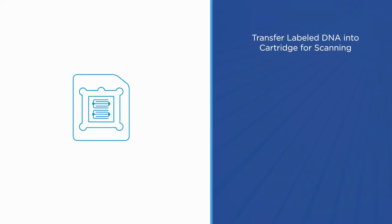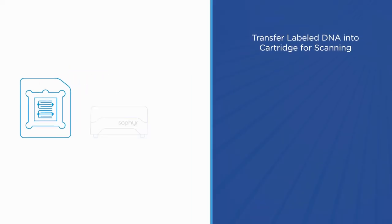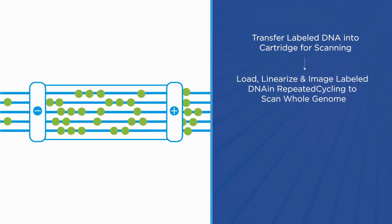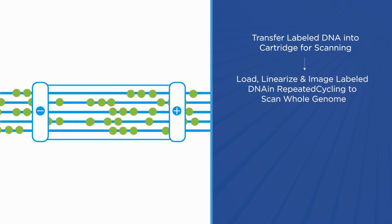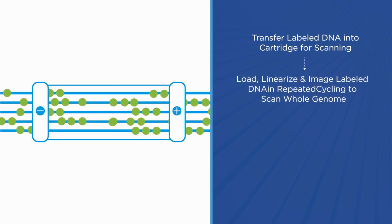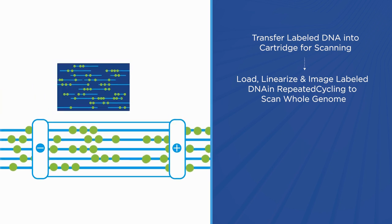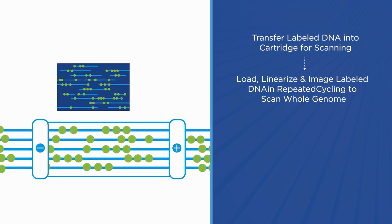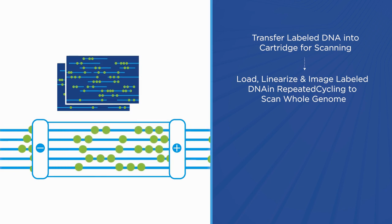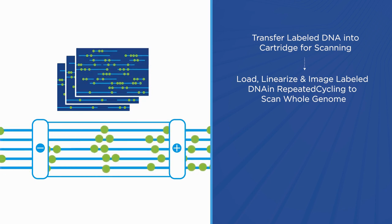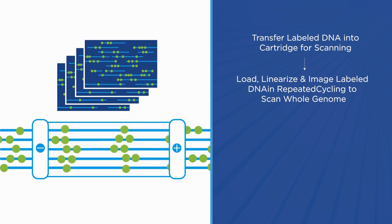The labeled DNA is pipetted into the SAFIRE chip and placed in the SAFIRE instrument. In the chip, the DNA is uncoiled, or linearized, across thousands of parallel nanochannels and imaged, revealing its fluorescent label patterns. By capturing these images in repeated cycles across the hundreds of thousands of nanochannels on the chip, all the images necessary to assemble a map of an entire genome are captured.